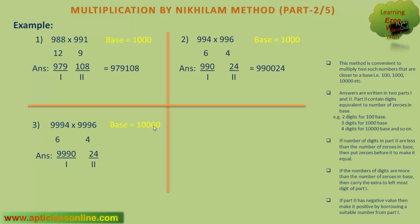But since the base is 10000, and it contains 1234 zeros, so we have to put 2 more zeros before it, so that it becomes a 4 digit number. So the answer will be 99900024.